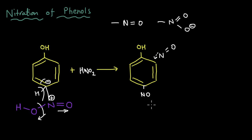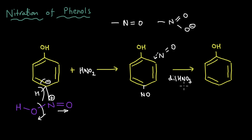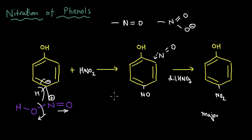Now all that is left is to convert the NO into NO2, and the easiest way is to simply oxidize it. So we react this with dilute HNO3 — since HNO3 is a strong oxidizing agent, it will convert the NO into NO2. And there we have our paranitrophenol, which is the major product. To sum up: we started with concentrated HNO3 and got picric acid; then tried dilute HNO3 which gave some paranitrophenol but more ortho product; so we reacted phenol with HNO2 to fix the NO at the para position, then oxidized it to get paranitrophenol as our major product.